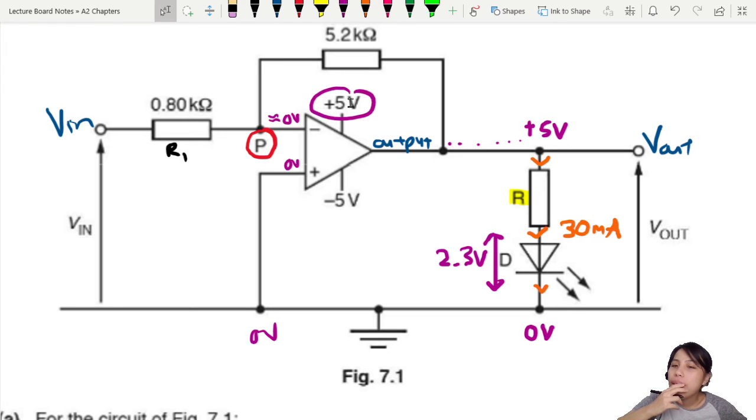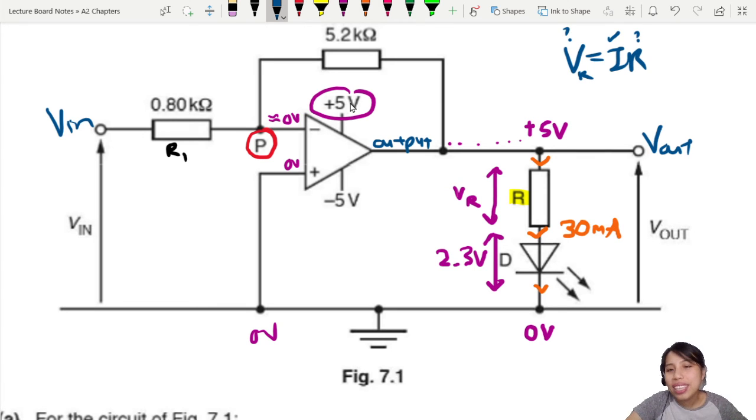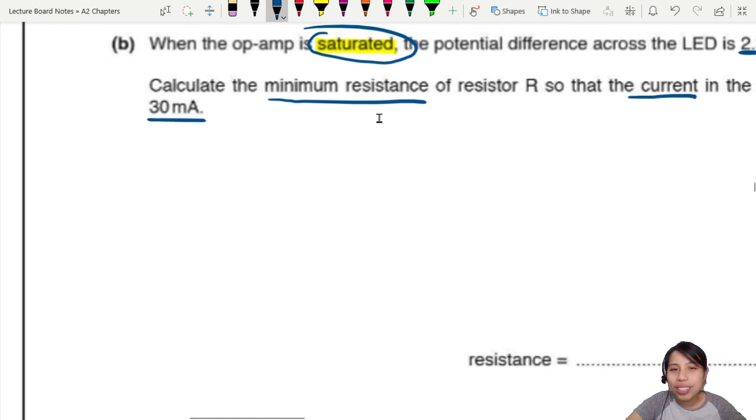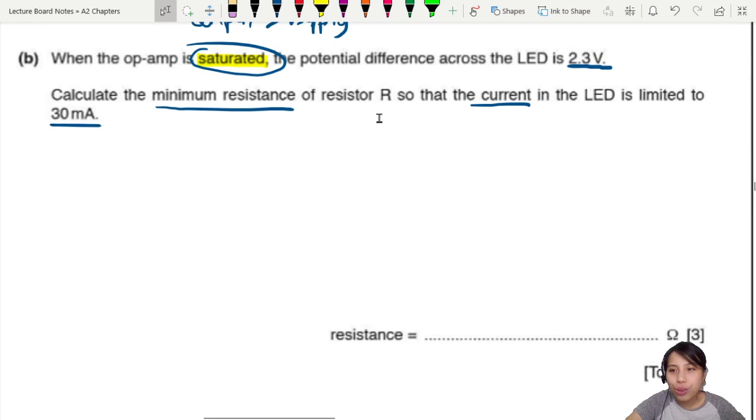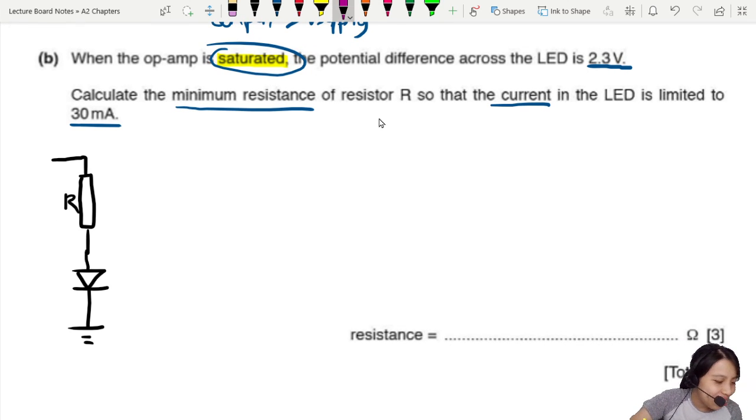We are trying to find the resistance R. Do we know this voltage? Let's redraw this question. If we can find V, we can find R because V equals IR for that resistor. We know what we want for current, we don't know R, we don't know V. Can we find V? Here's the diode - we know it comes in at plus 5, must eventually drop down to zero, and we know the potential difference across the LED is 2.3 volts.